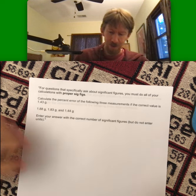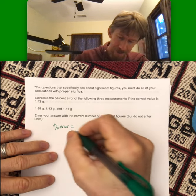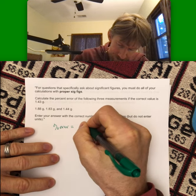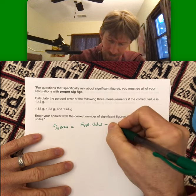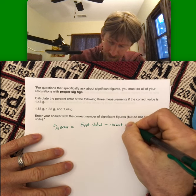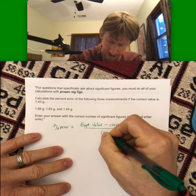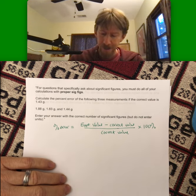All right so let's start with the percent error formula. Percent error is going to be experimental value, which in this case will be an average, minus correct value over the correct value times 100 percent. So over the correct value and then off to the side times 100 percent. This experimental value in this case and typically will be an average.